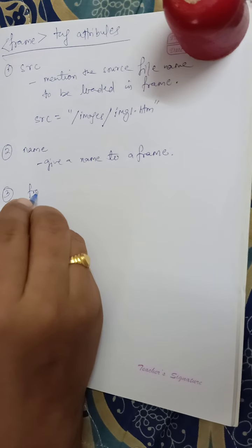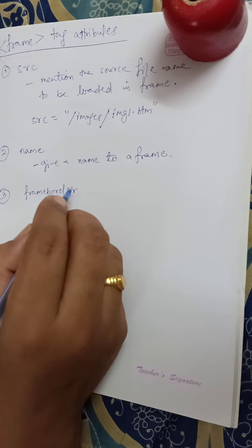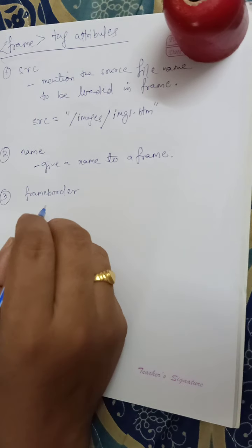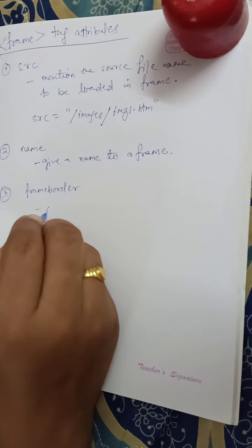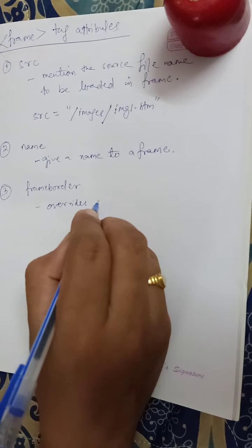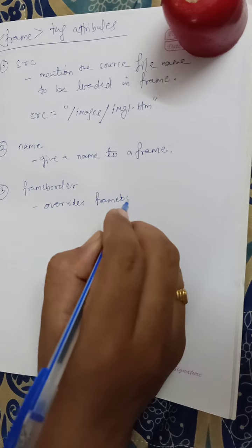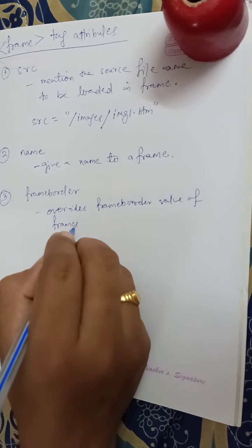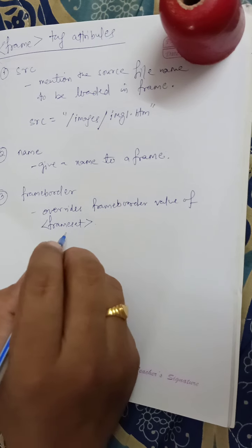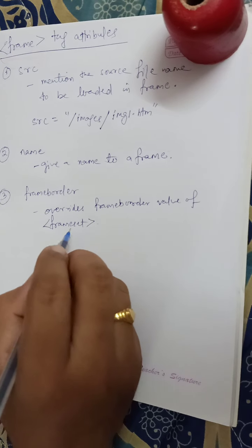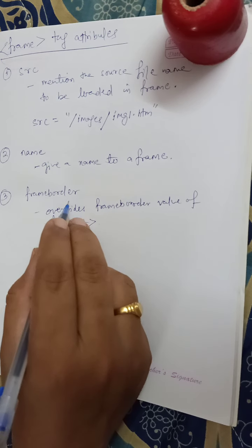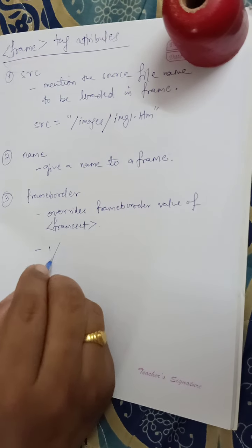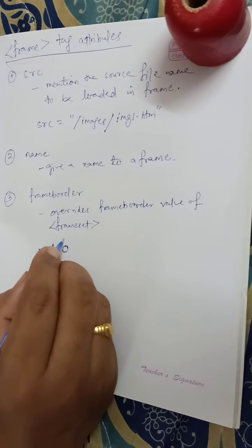The third frame tag attribute is 'frameborder'. This attribute specifies whether or not the borders of that frame are shown. It overrides the value given in the frameborder attribute of the frameset tag. It can take values either 1 or 0.